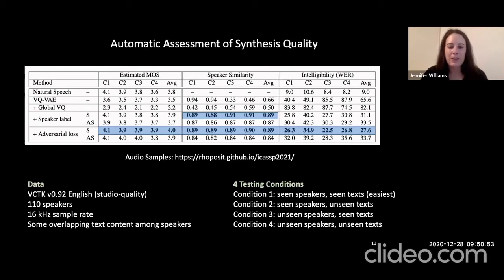You can visit the provided URL to listen to audio samples. We find that the adversarial loss with Softmax performs the best in terms of estimated mean opinion score, speaker similarity, and automatic ASR-based intelligibility.